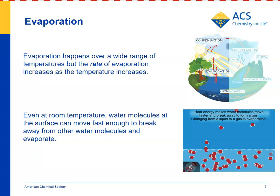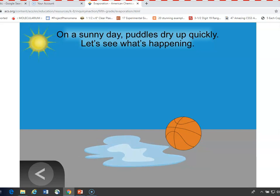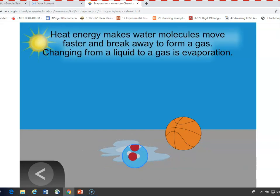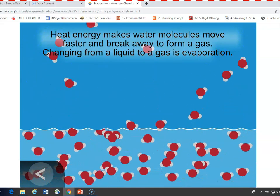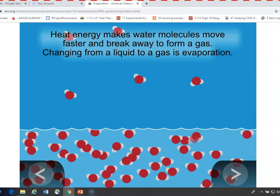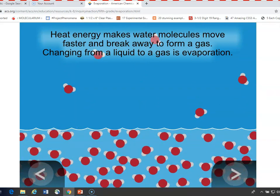Evaporation happens over a wide range of temperatures, but heating water does increase the rate of evaporation. The animation shows a puddle of water on a sunny day. The puddle shrinks, and students should understand that the water is made up of water molecules, and as the sun heats the water, the molecules move faster and evaporate at a faster rate.